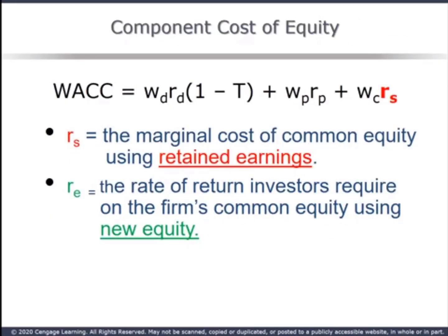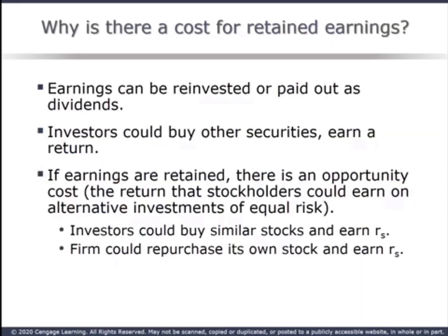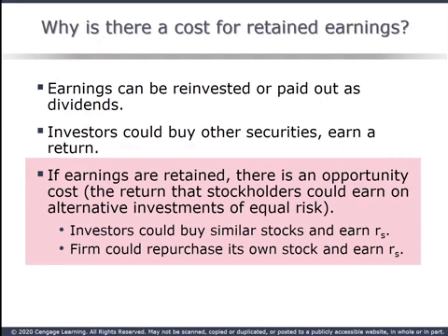The last component is the cost of equity. Equity can come from two sources: RS is the cost of retained earnings, and RE is the cost of new equity. Recall that retained earnings belong to the shareholders — they just weren't paid out as dividends, but retained to reinvest in the firm. Retained earnings have an opportunity cost. If the earnings had been paid out, shareholders could have earned a return on them. The firm could have repurchased its own stock and earned RS. So retained earnings are not free money — easy, but not free.